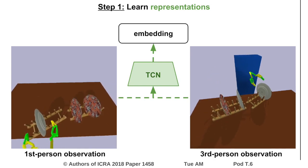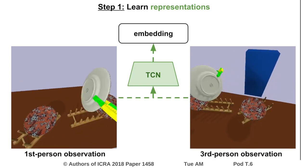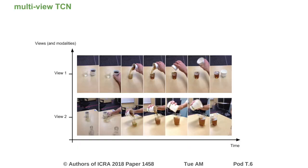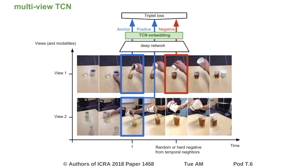These videos contain positive demonstrations of the task, but also random interactions to cover a general set of possible states in the world. Our model uses a triplet loss trained on multi-viewpoint observations. Co-occurring frames from multiple viewpoints are attracted to each other in the embedding space, while visually similar frames from nearby time steps in the same video are pulled apart. This encourages the embedding to be invariant to viewpoint, but sensitive to semantic cues that are indicative of time, such as whether liquid is pouring into a cup.